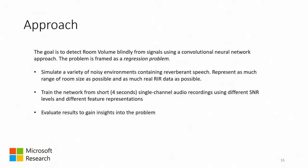Our proposed approach is to detect room volume blindly from signals using a convolutional neural network, framing the problem as a regression problem. We aim to simulate a variety of noisy environments containing reverberant speech, representing as much range of room size as possible and as much real impulse response data as possible. The impulse responses are used to simulate the noisy environments. We thought about training a network from short single-channel audio recordings — four seconds long — using different SNR levels, simulating different ratios between noise and reverberant speech.